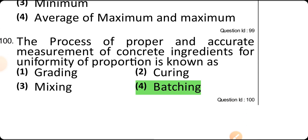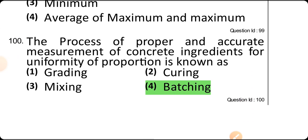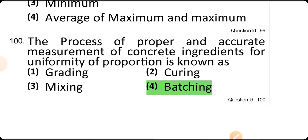The process of proper and accurate measuring of concrete ingredients for uniform proportions is known as batching — including volume batching and weigh batching. This is about the PWD JE question paper.